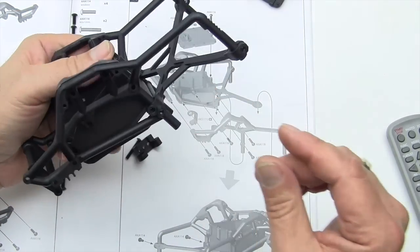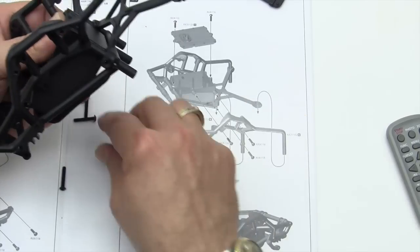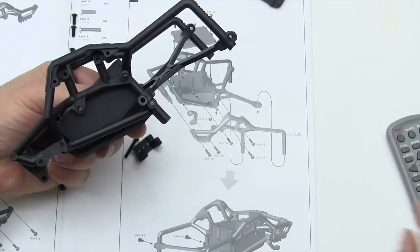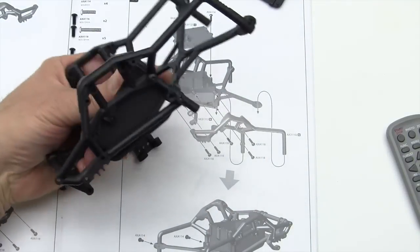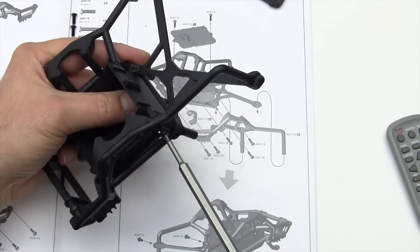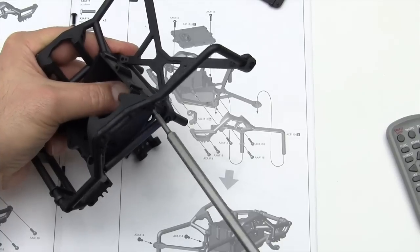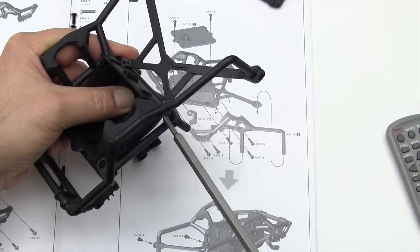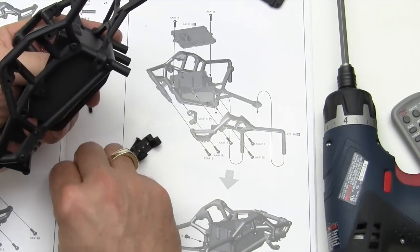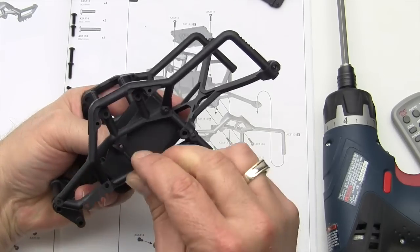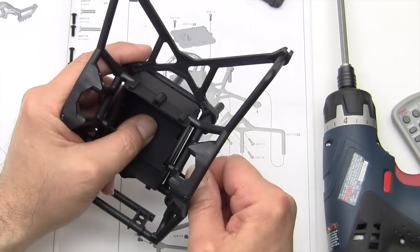At this point let's go ahead and put a couple screws in to hold this. I'm going to put one into the back of the bucket here, and one into the front of the bucket. Make sure everything's all popped and lined up in position where it belongs.